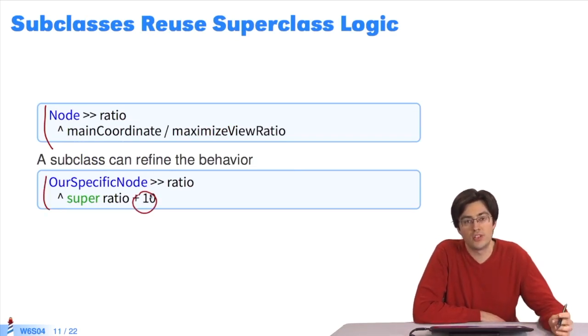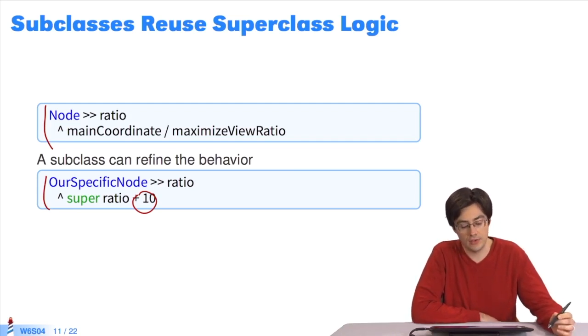Either change it completely, or recall the behavior of the superclass and make a modification. That's what I'm doing here. I send a ratio message to super to execute the code as it is in the superclass. And I add 10, which is what my goal was.